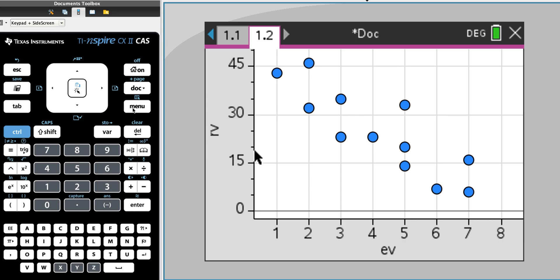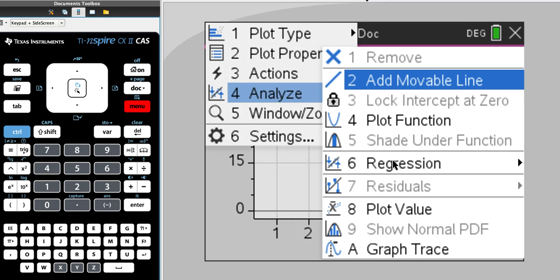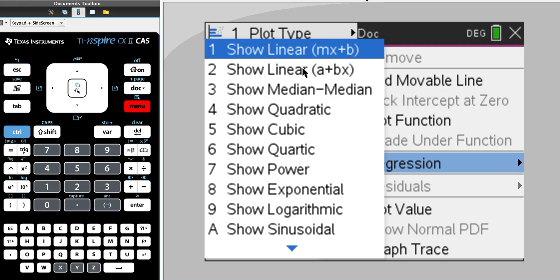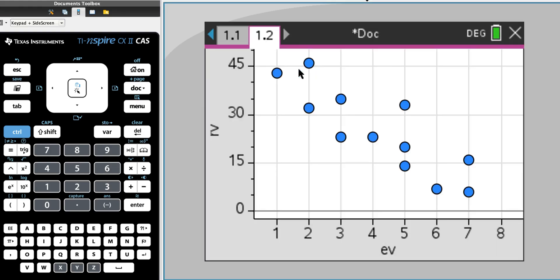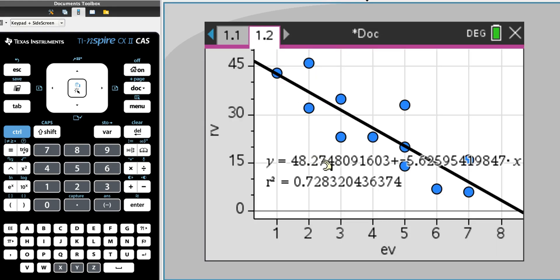If I go into menu, analyze, regression, and show linear a plus bx, the CAS will tell me the regression equation. So RV equals 48.27 minus 5.6. I can see the gradient or slope is negative 5.6, and I can see my y-intercept is 48.2.